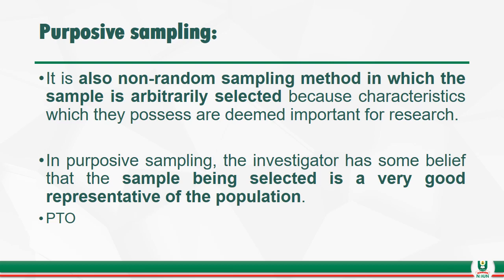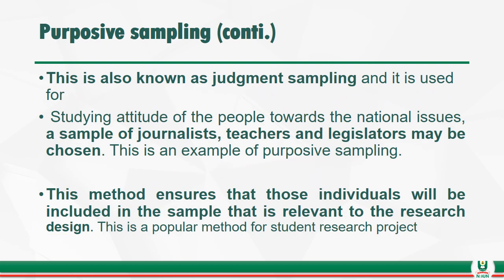Purposive sampling is a non-random sampling method in which a sample is arbitrarily selected because of the characteristics which they possess that are deemed important for the research. In purposive sampling, the investigator has some belief that the sample being selected is a very good representative of the population. This is also known as judgmental sampling and is used for studying the attitude of people towards national issues — such as a sample of journalists, teachers, or legislators. This method ensures that those individuals relevant to the subject are included in the sample, and it is a popular method for student research.